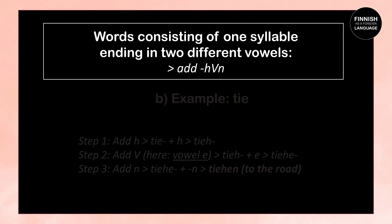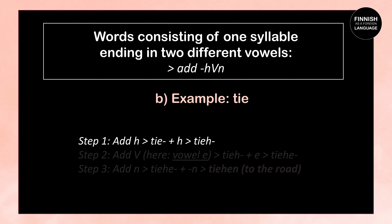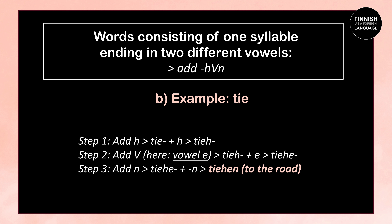Now with a one-syllable word ending in two different vowels: tie, which means road or way. We add H: tie + H = tieh. In the second step we add the last of the two vowels — here it is e: tieh + e = tiehe. Then we add N: tiehe + N = tiehen, which means to the road or to the way.